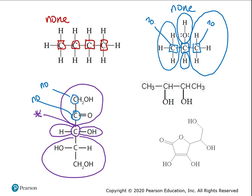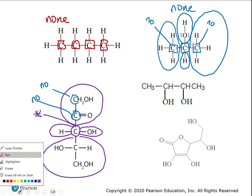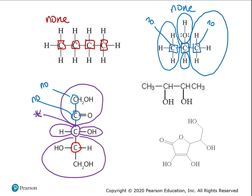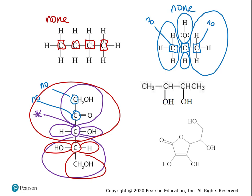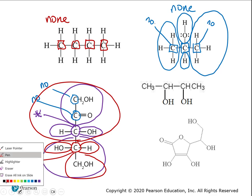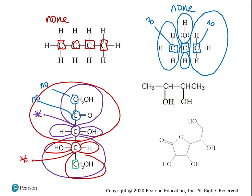Let's look at the next carbon down — on the right is an H, on the left is an OH, below is a one-carbon group, and above is a three-carbon group. Are those all different? Yes — so that one's chiral too. The last one is CH2OH — no, because CH2 has two hydrogens directly connected, so they can't be chiral. Anytime you see CH2 or CH3, just move on. If you see more than one hydrogen directly connected, cross it off.